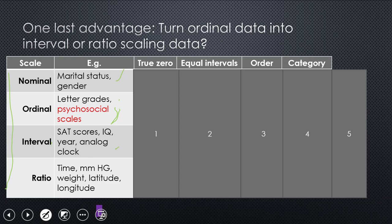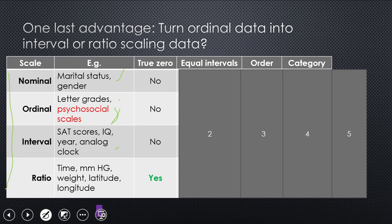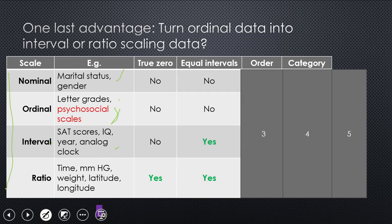And then finally, with ratio scales, things like time, millimeters of mercury for blood pressure. Your weight is a ratio scale. Latitude and longitude are both ratio. Only one of these has a true zero, the last one, the ratio scale. And only two of these have equal intervals. So the bottom two have equal intervals. The first two do not. And even with psychosocial scales, often these scales have no true interval feature. They're really just, they're not equal intervals. You need that to have interval scales.